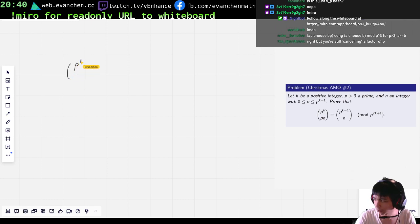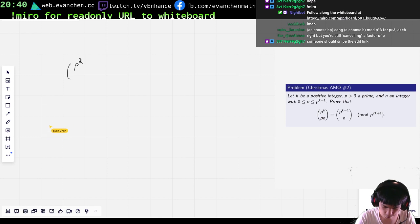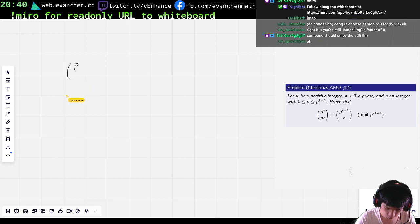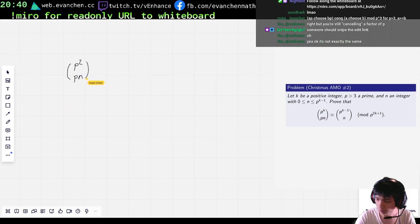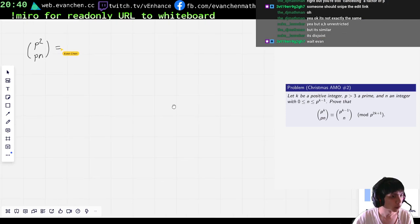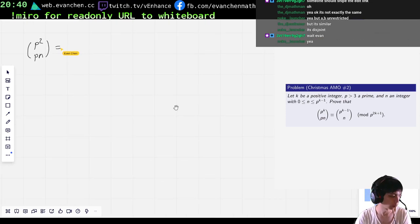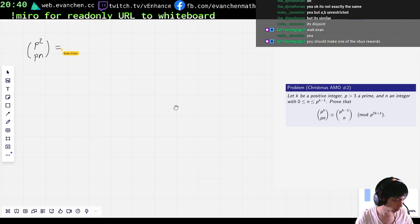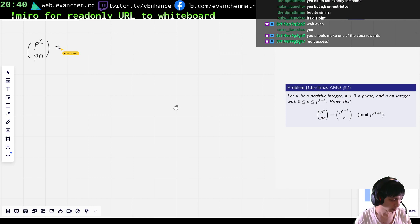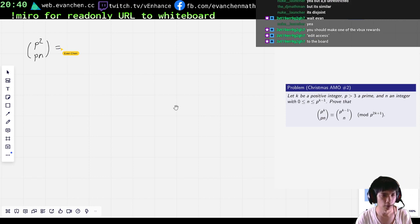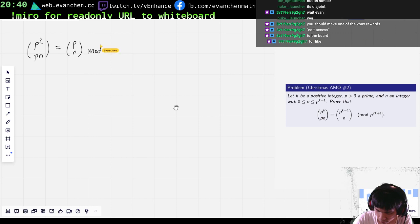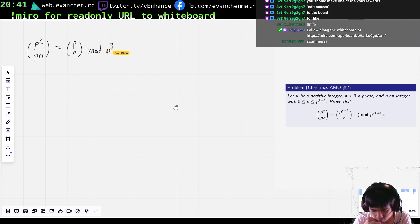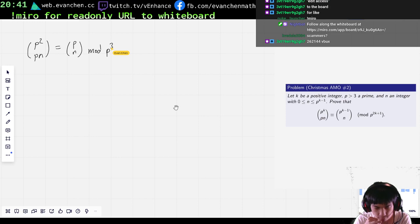Okay, so like, p to the... So if, let me first write k equals... Oh, k equals 1 doesn't make any sense, never mind. What about like k equals 2? P squared choose pn, we want equal to... Y7, yes. Edit access. I'm not giving you edit access. Sorry.